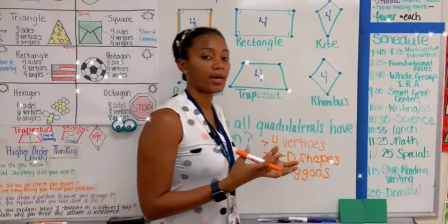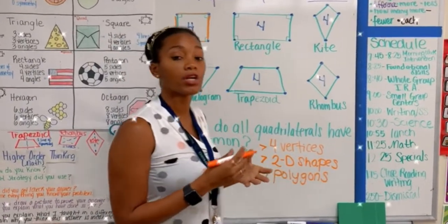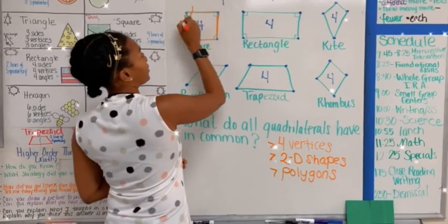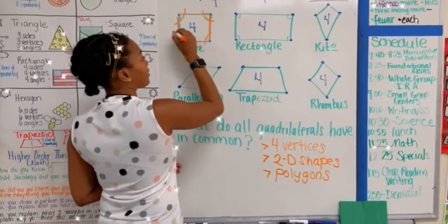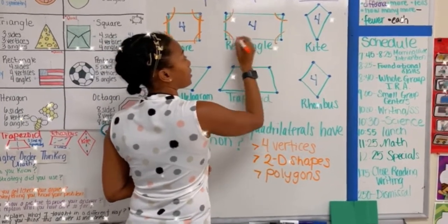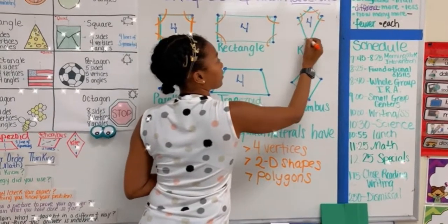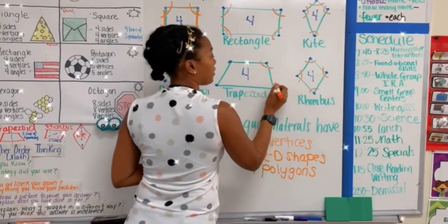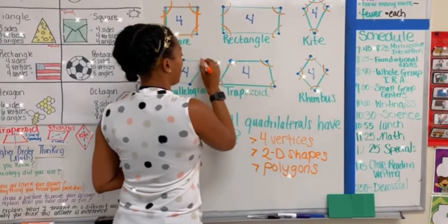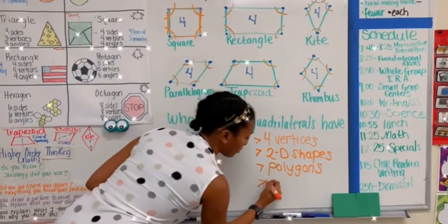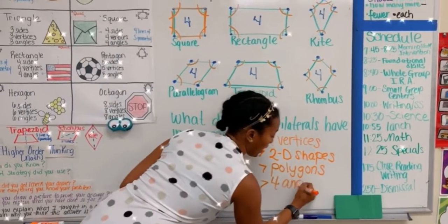Lastly, when I look at each of the quadrilaterals, I noticed that they all have four angles. There is an angle here, here, here, and here, and so on and so forth. So they each have four angles.